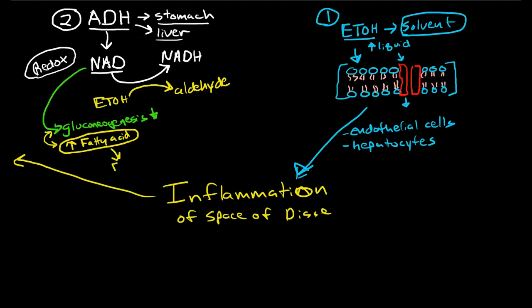And what this does is it causes fatty depositions in the space of Disse. The fatty acid depositions actually cause inflammation by number one, it activates Kupfer cells. That's only one pathway. It actually has a number of other pathways in that it initiates the production of cytokines in the space of Disse.